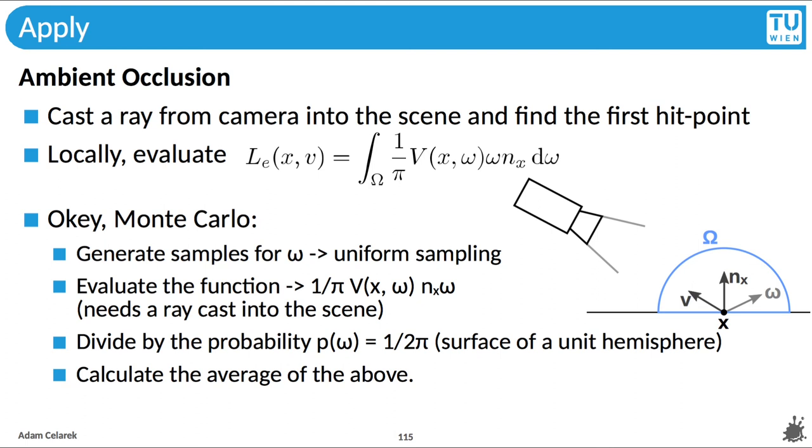And that's the algorithm. We start at the camera, cast a ray according to the pixel position, finding our first hit point. On that hit point, we evaluate that integral using Monte Carlo. To that end, we generate a sample omega using uniform sampling. Search the internet or check our assignments if you want to know the formula. We then evaluate the function 1 over pi times visibility, which needs a ray cast into the scene, times dot between the normal and omega. Next, we divide by the probability, which is 1 over the surface area. Since we do uniform sampling, the surface of the hemisphere is 2π according to Wikipedia. And finally, we compute the average of these samples.